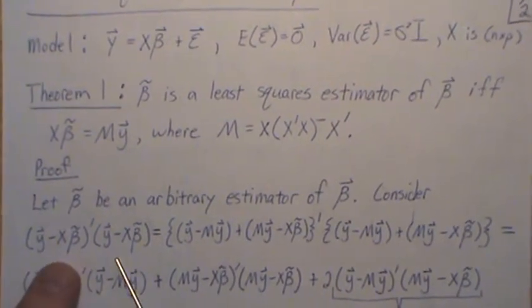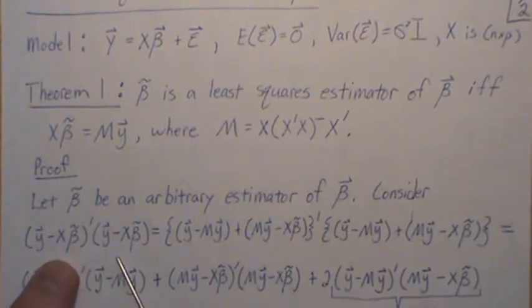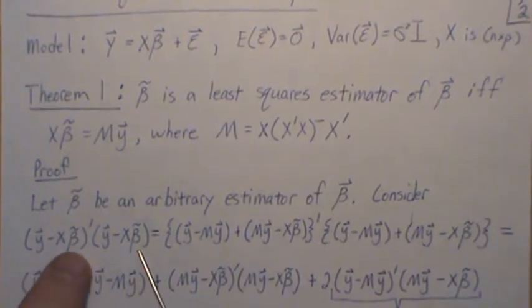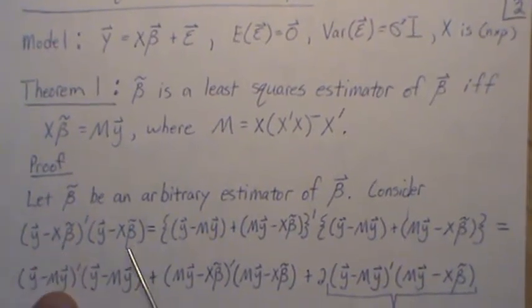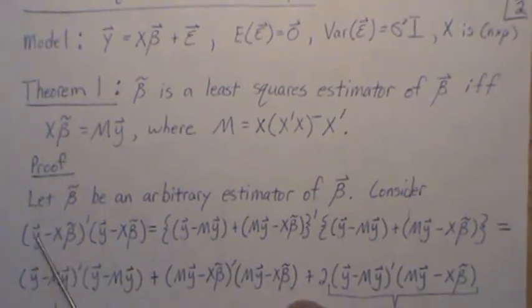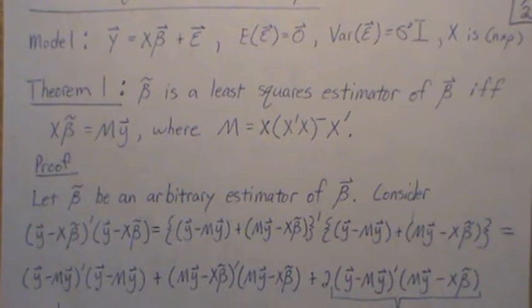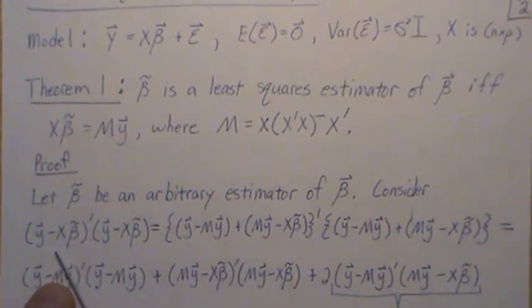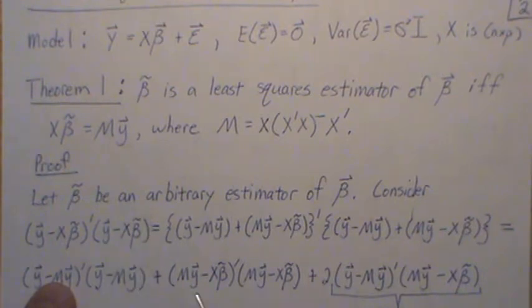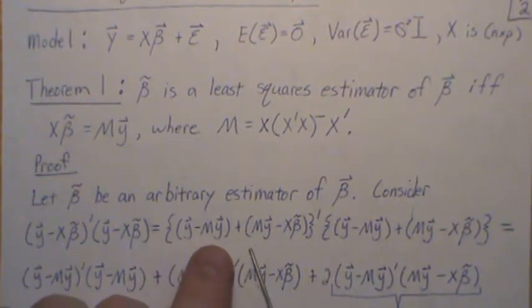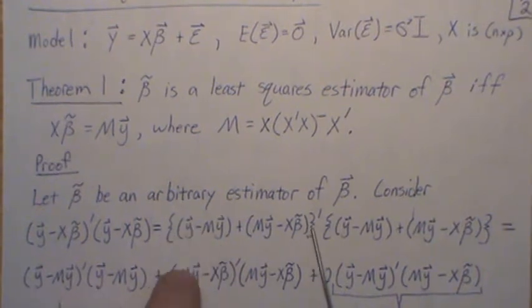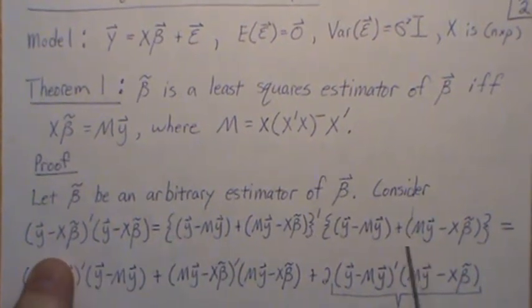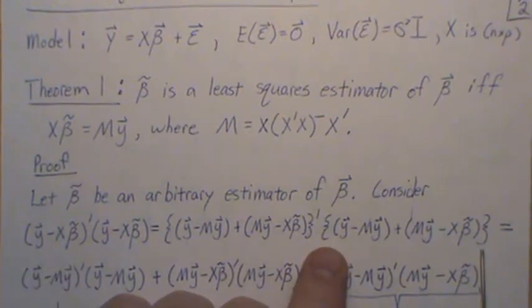But let's look at some of the properties of this. Let's do some algebra and revisit this concept of changing the beta tilde parameter, tweaking it until we find the one that makes this absolute minimum. Now what we're going to do is we're going to add zero here, and we're going to add zero into this parenthesis. So we have m y minus m y in this first piece here, and then we have m y minus m y in this second piece.